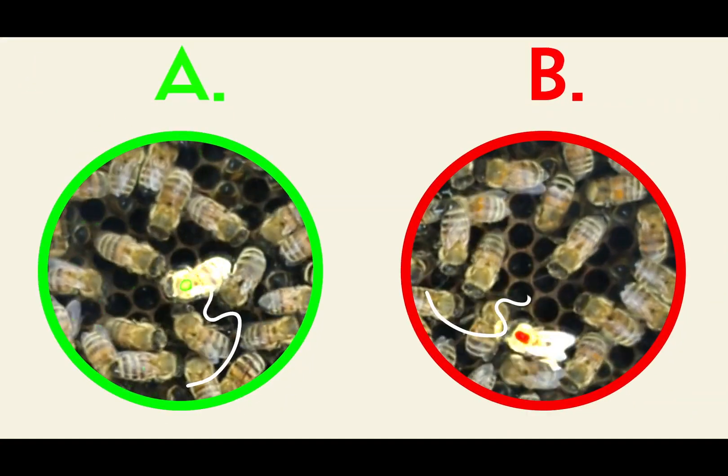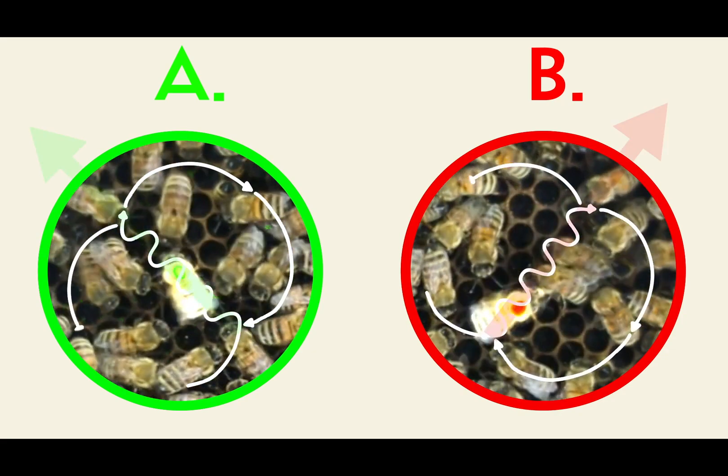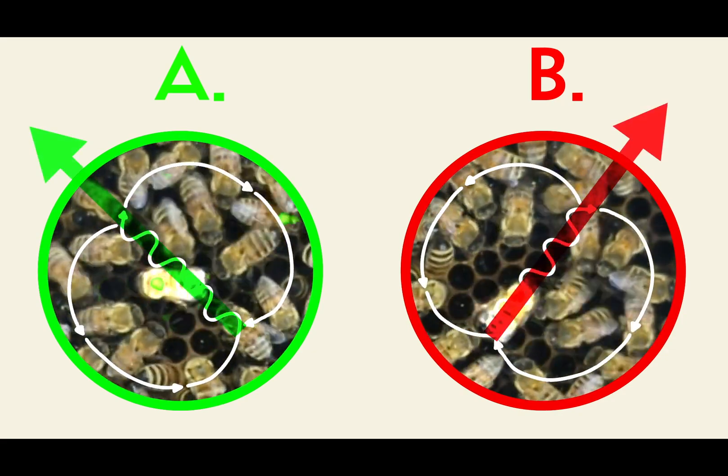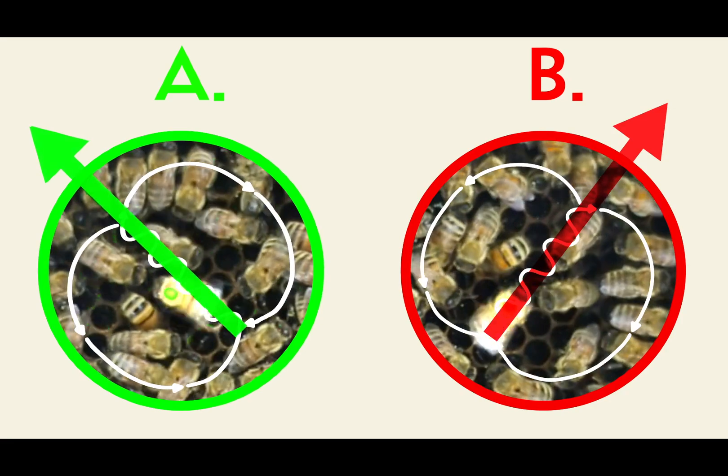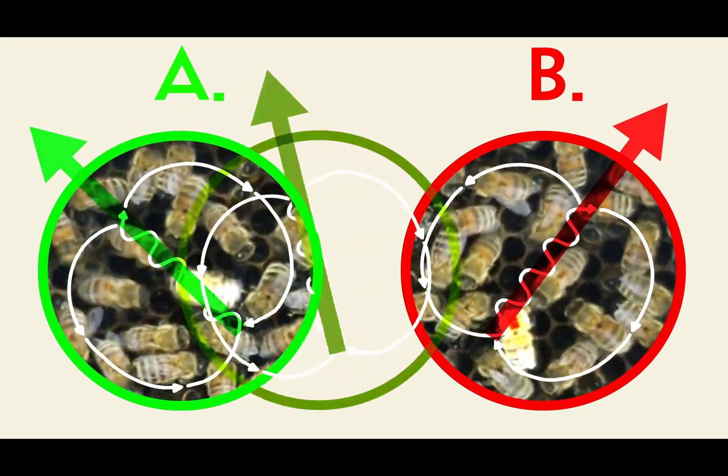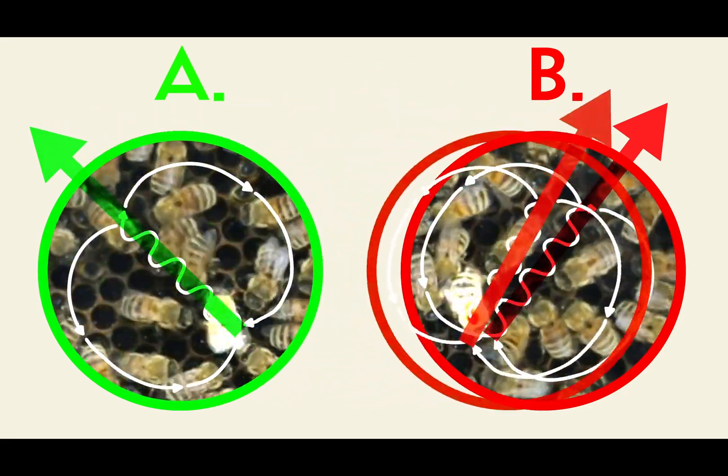While both sets of bees perform the classic figure eight dance, the orientation of the dances is offset between the two groups. Bees returning from one feeder perform a rotated version of the dance done by the other bees.